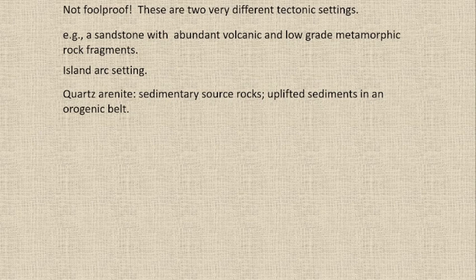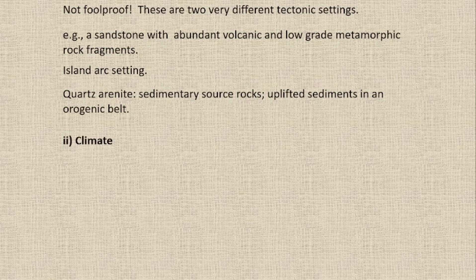If sediments are uplifted and sit in a recycled orogenic belt, we have quartz and quartz — quartz is a very strong mineral that cannot be altered easily. So if we have already-formed feldspar and have hot and humid conditions, the physical-chemical weathering cycles will alter that feldspar into first illite and then kaolinite. All those feldspar minerals which are unstable are very vulnerable to chemical weathering.